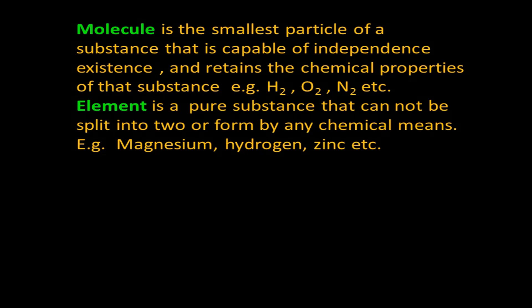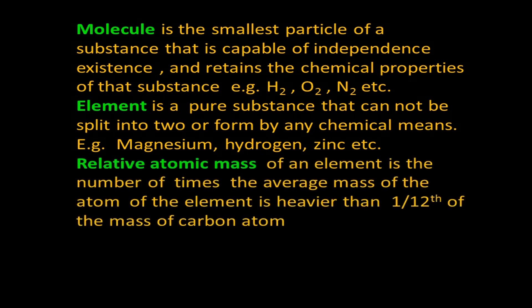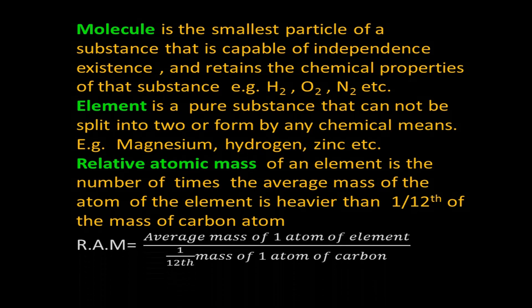Examples of elements include magnesium, hydrogen, and zinc. The relative atomic mass of an element is the number of times the average mass of one atom of that element is heavier than one-twelfth of the mass of carbon-12. The formula is: relative atomic mass = average mass of one atom of the element ÷ (1/12 × mass of one atom of carbon-12).